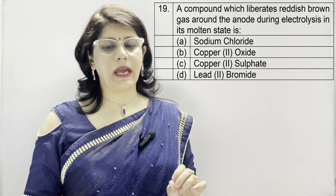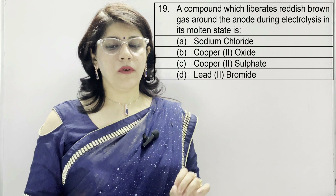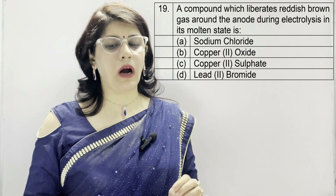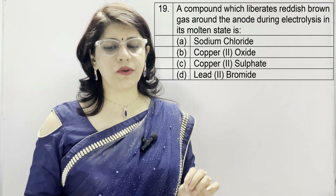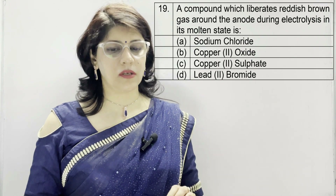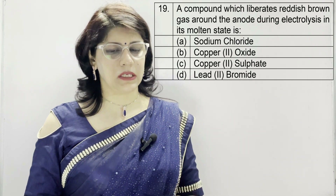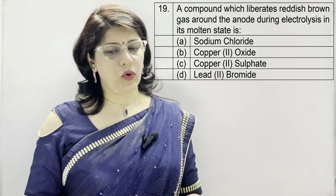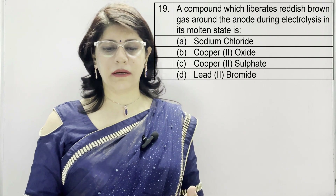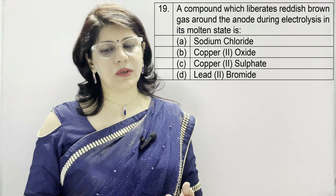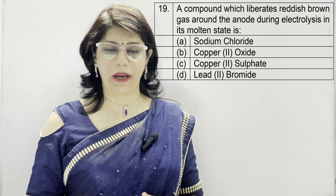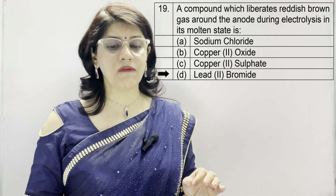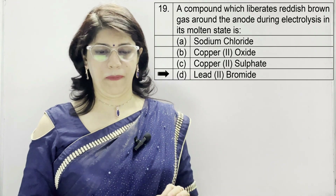Question number 19: a compound which liberates reddish brown gas around the anode during electrolysis in its molten state is — A: sodium chloride, B: copper(II) oxide, C: copper(II) sulfate, D: lead(II) bromide. The correct option is D — lead(II) bromide.